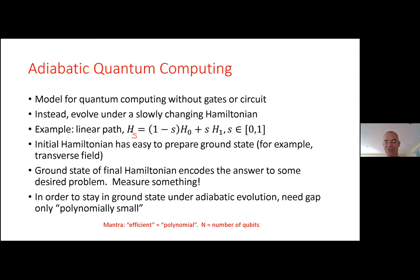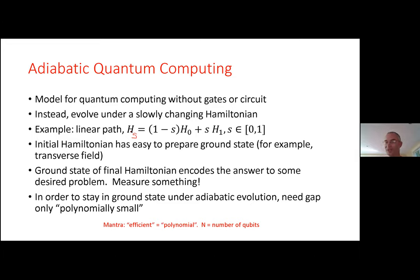The hope is that if you evolve sufficiently slowly, and if the ground state and excited state are separated by a gap along the whole evolution, you'll stay in the ground state. If you evolve quickly, you'll start to transition into excited states. So as long as the gap between them is not too small, you can stay in the ground state throughout the evolution.